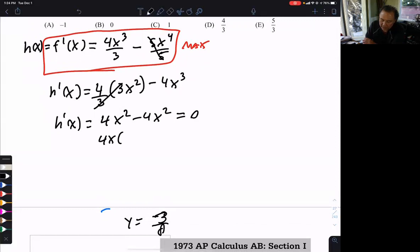I'm going to factor out a 4x, be left with the x minus, whoa, that's a cube there, huh? I messed up. That's a cube. So I'm going to factor out a 4x squared. And that's going to leave me with 1 minus x. So my two critical points would be x equals 0 and x equals 1.